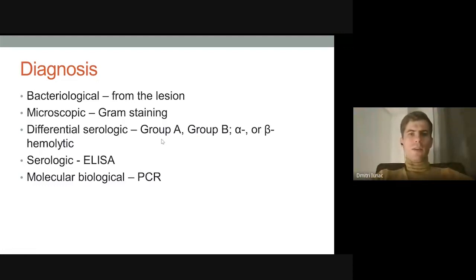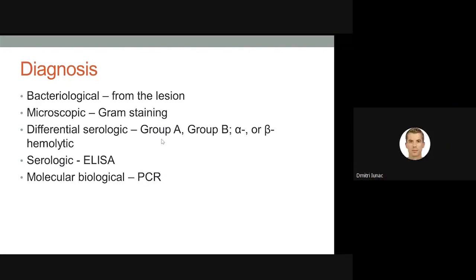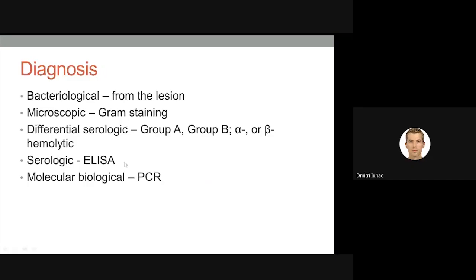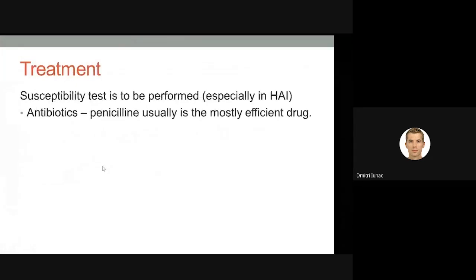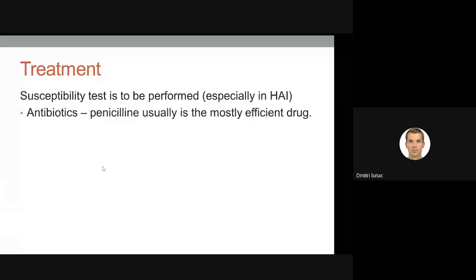The most widespread groups are A and B — alpha and beta hemolytic streptococci. Other serological tests used include ELISA and molecular biological test PCR. Regarding treatment, penicillin is usually the most efficient drug and there are almost no cases of drug resistance. Even so, susceptibility tests are sometimes needed, especially in healthcare-associated infections.